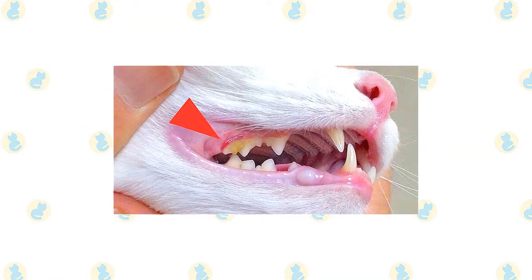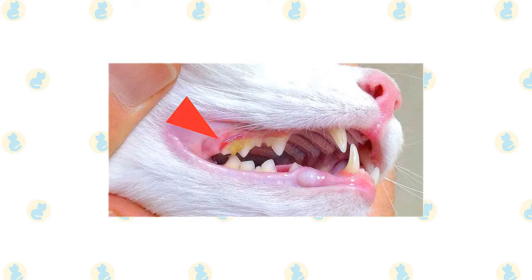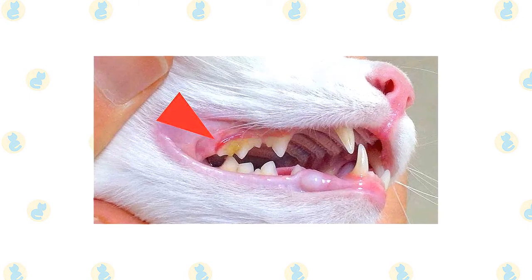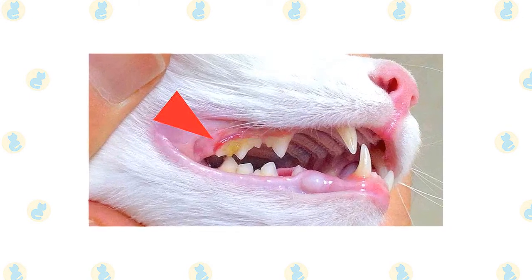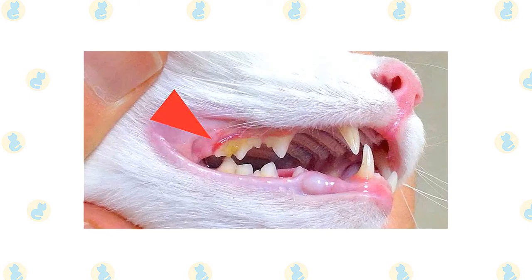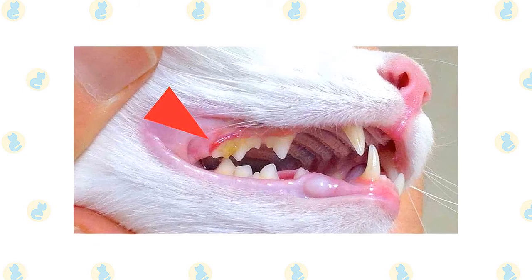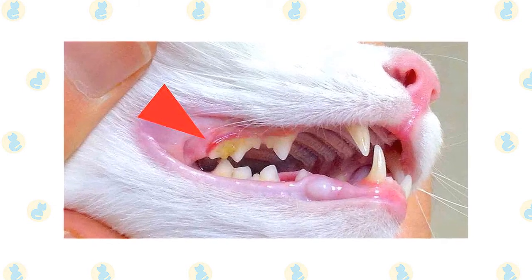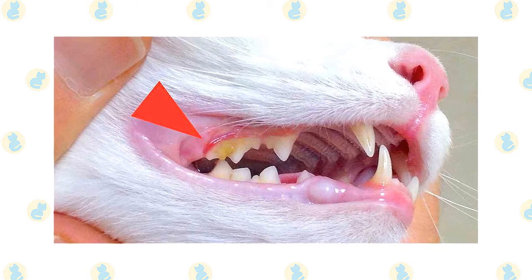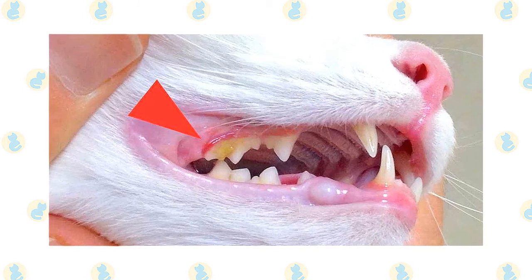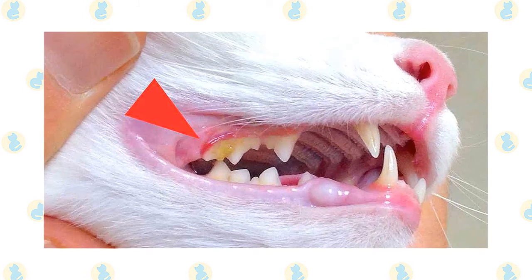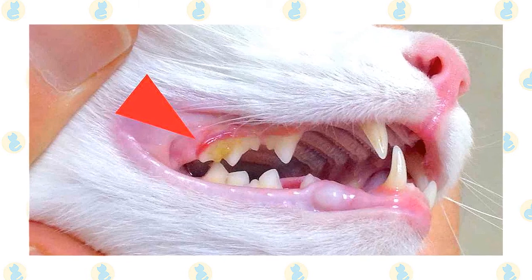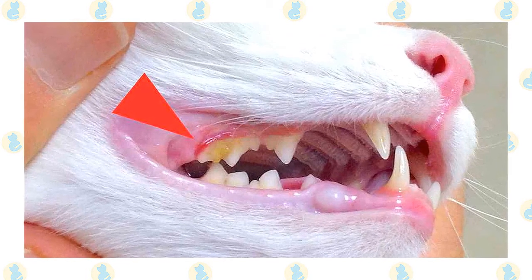The three most common dental diseases in cats are gingivitis, periodontitis, and tooth resorption, and the severity of each of these conditions can vary significantly. Dental disease in cats can cause serious pain and discomfort, which can impact a cat's quality of life. In many cases, dental disease causes a cat to stop eating, which leads to a variety of health problems.